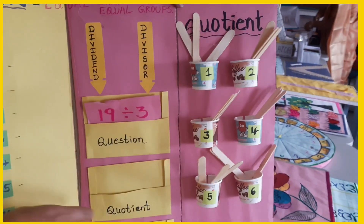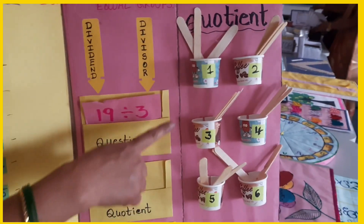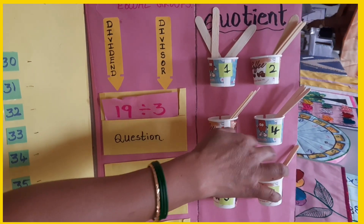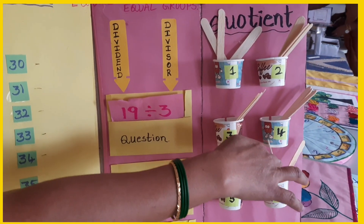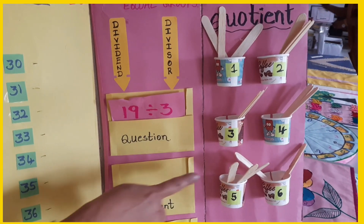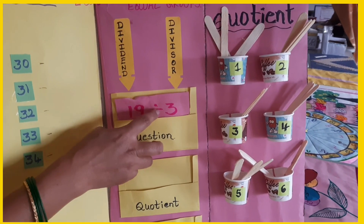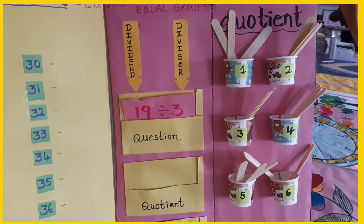You must put the ice cream sticks in the cups — 3 sticks into each of 6 cups. This represents 19 divided by 3.